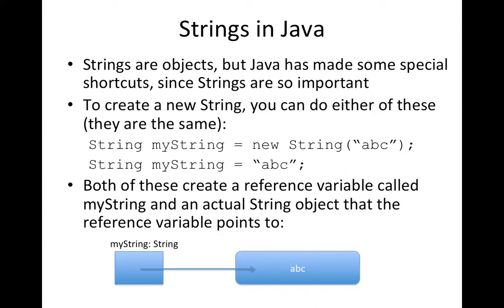And probably the most important shortcut that you've seen and not really thought about is the fact that you can create a string in this way. Looking at this line: string myString equals ABC. You've done this many, many times. What you probably didn't really think about is that this is actually equivalent to the standard way of creating objects, where we call new, give the class name, and pass in some parameters. Both of these lines of code have the exact same effect.